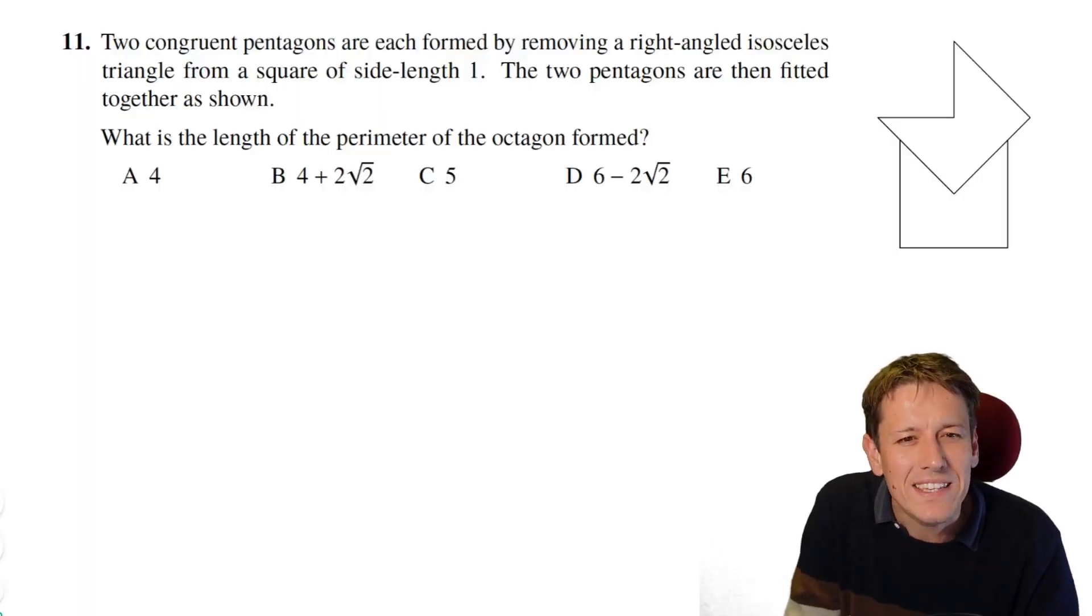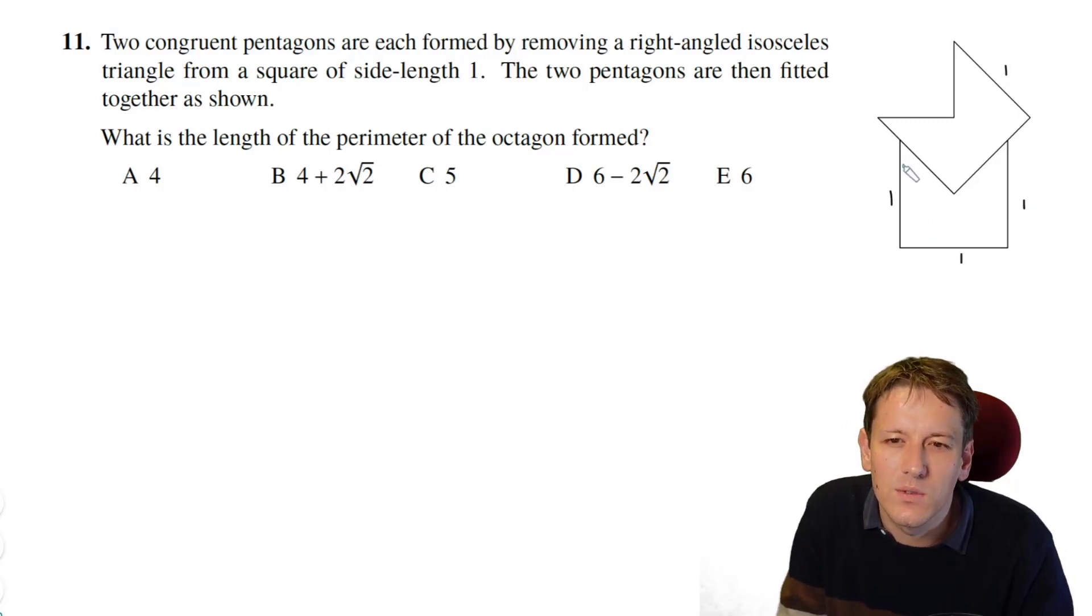In question 11, we've got two congruent pentagons, each formed by removing a right-angled isosceles triangle from a square of side length 1. We fit them together and we end up with an octagon, and so we want to work out its perimeter. Now, some parts of the perimeter are easier than others. Obviously, these side lengths are 1, 1, 1, and 1.